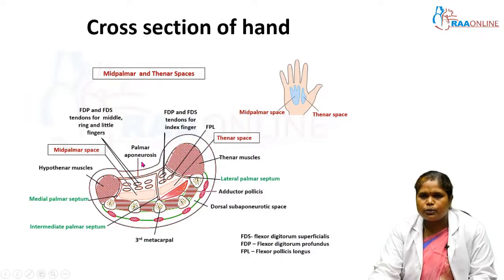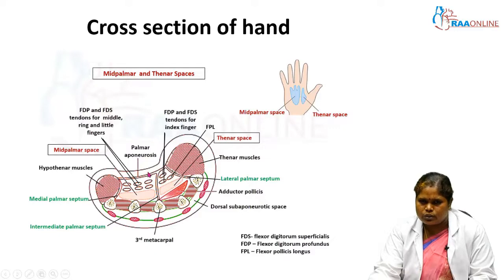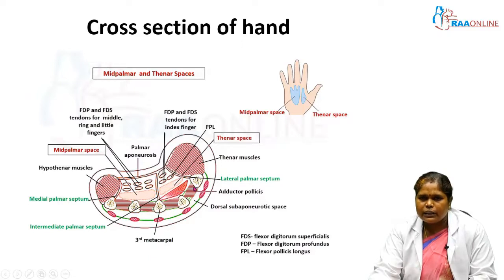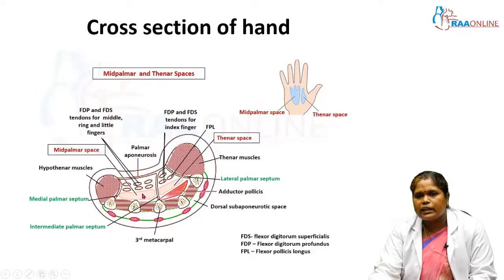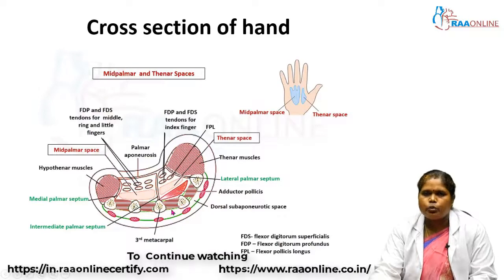Coming through the layers from superficial to deep: first is the skin and superficial fascia, then the deep fascia — the palmar aponeurosis. Once we cut the palmar aponeurosis the next layer is the long flexor tendons, seen here as cut ends. Deeper still are the metacarpal bones with the interosseous muscles in between. Our fascial spaces lie below this deep fascia and below the tendons — you need this orientation of the cross-section of the hand.